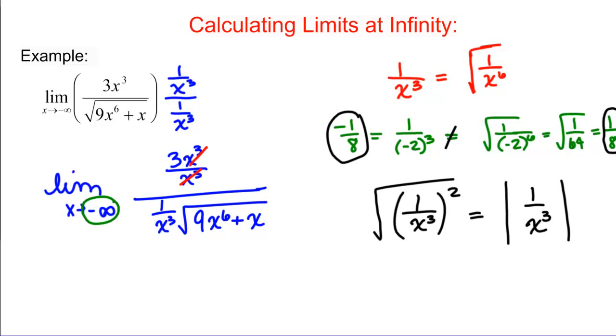Taking the absolute value doesn't do anything if you were using a positive number. But if you're doing a negative number, and you want the number to still be negative when you're done, you have to put the negative in front of the square root of 1 over X to the 6th to fix the fact that you just took its absolute value.